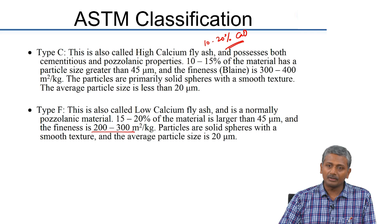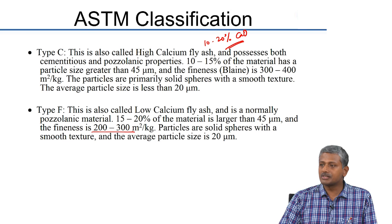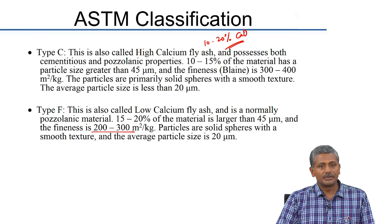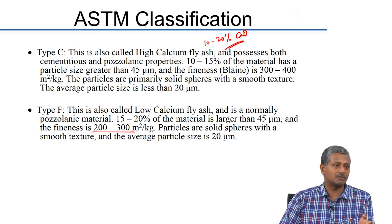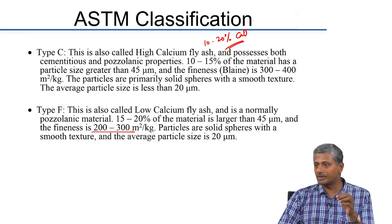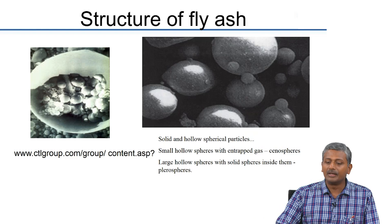In both type C and type F, particles are solid spheres with an average particle size of about 15 to 20 microns. This spherical particle shape is what essentially helps fly ash provide better workability in a concrete system. However, it should be noted that very often in the laboratory when we actually do replacement of cement with fly ash, depending on where the fly ash has been collected, we often find that workability is actually reduced and not increased.